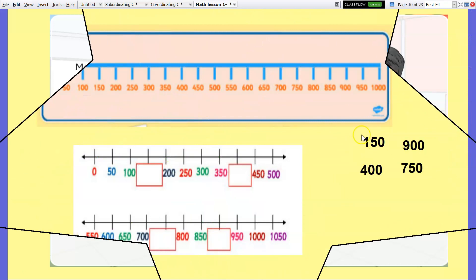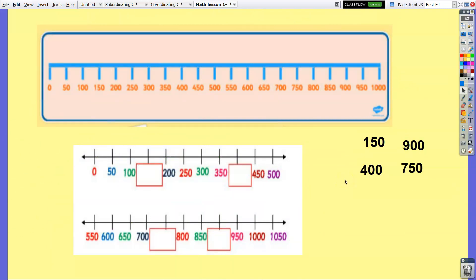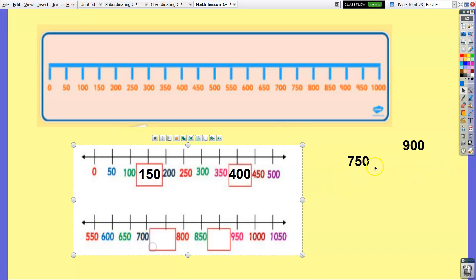Let's try these. What are the missing numbers on these arrays? Now let's see if your answers are correct: 0, 50, 100, 150, 200, 250, 300, 350, 400, 450, 500, 550, 600, 650, 700, 750, 800, 850, 900, 950, 1000 and 1050.